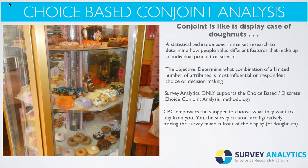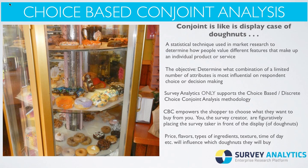With a choice-based conjoint, it empowers the shopper to choose what they want to buy from you. As a survey creator, you are figuratively placing that survey taker in front of the display of donuts. Such things as price, flavors, types of ingredients, textures, and time of day all influence which type of donut they would buy at that time.